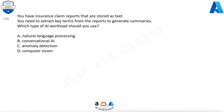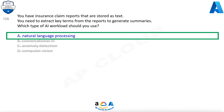Question 106. You have insurance claim reports that are stored as text. You need to extract key terms from the reports to generate summaries. Which type of AI workload should you use? A. Natural language processing. B. Conversational AI. C. Anomaly detection. D. Computer vision. Answer: A.